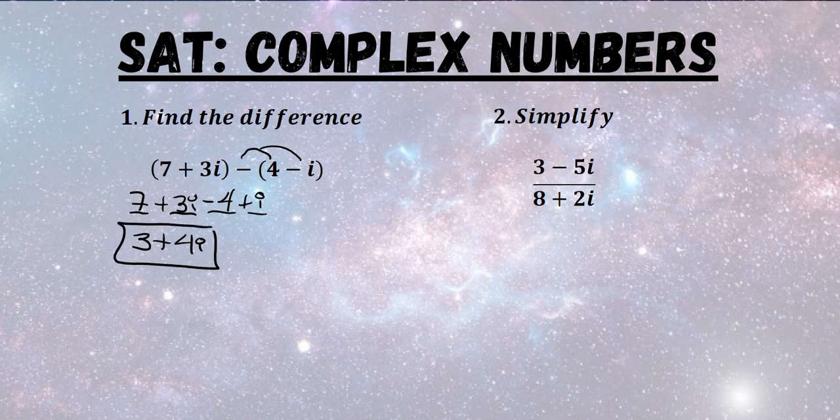For number 2 we're going to simplify the fraction of complex numbers 3 minus 5i and 8 plus 2i. The way that we simplify this fraction is we have to multiply the top and the bottom by the conjugate of the bottom.